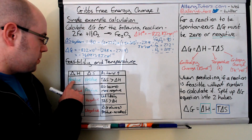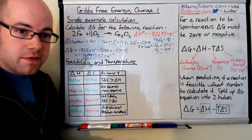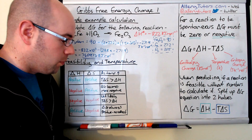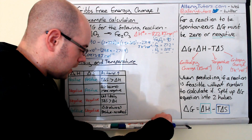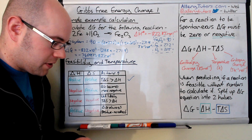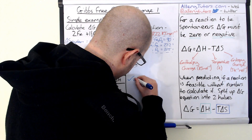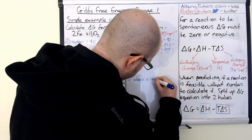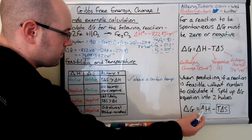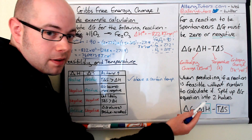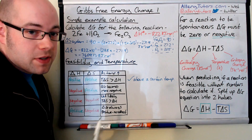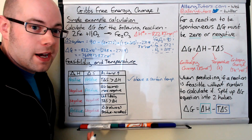If delta H is positive and delta S is positive, then increasing the temperature makes T delta S bigger than delta H, so the reaction is feasible — but only above a certain temperature. If the T value is large enough, the T delta S term will exceed delta H, giving a negative delta G, and hence the reaction is feasible.